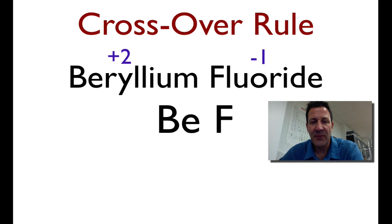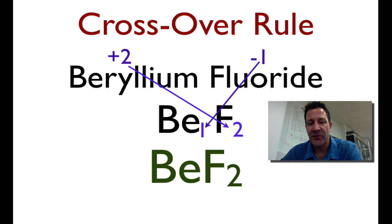I'm going to apply the crossover rule. I'm going to take the 2 from the beryllium and put it onto the fluorine. I'm going to take the 1 from the fluorine and put it on the beryllium. So that is the chemical formula, Be1F2. Now, we don't write down the 1. So the final formula is just going to be BeF2. That is the crossover rule.